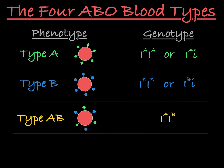And finally, let's look at type O blood. The red blood cells of this person do not have type A or type B antigens. The only allele combination that leads to this phenotype is homozygous little i. Because the little i allele produces a truncated non-functional enzyme, the red blood cells of this person do not produce or display type A or type B antigens.